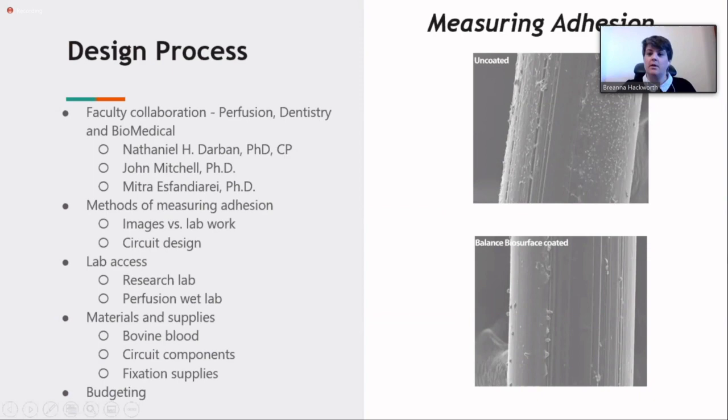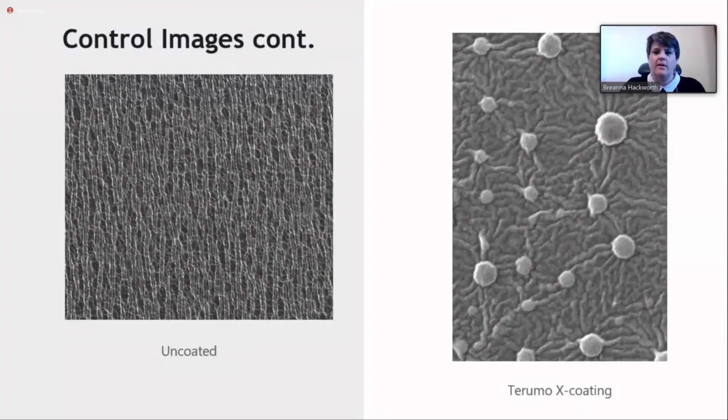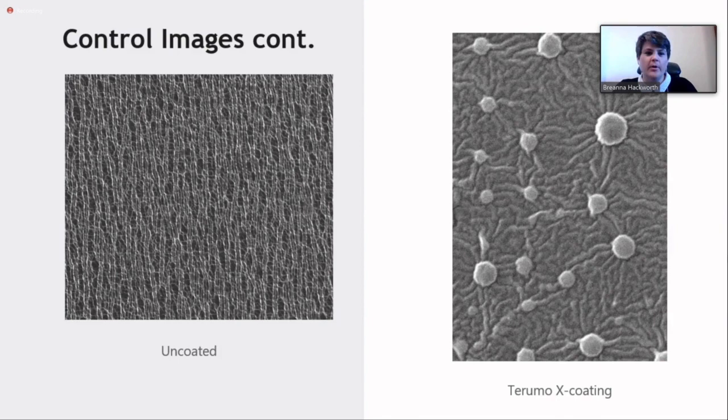These are some control images that we took without any blood run through the samples. This is just the images as they were. You can see they all look pretty different, which was surprising to us. We found a section of uncoated tubing in our lab, so we decided to put that under the SEM as well. We thought it was funny because it kind of looks like plant cells a little bit.